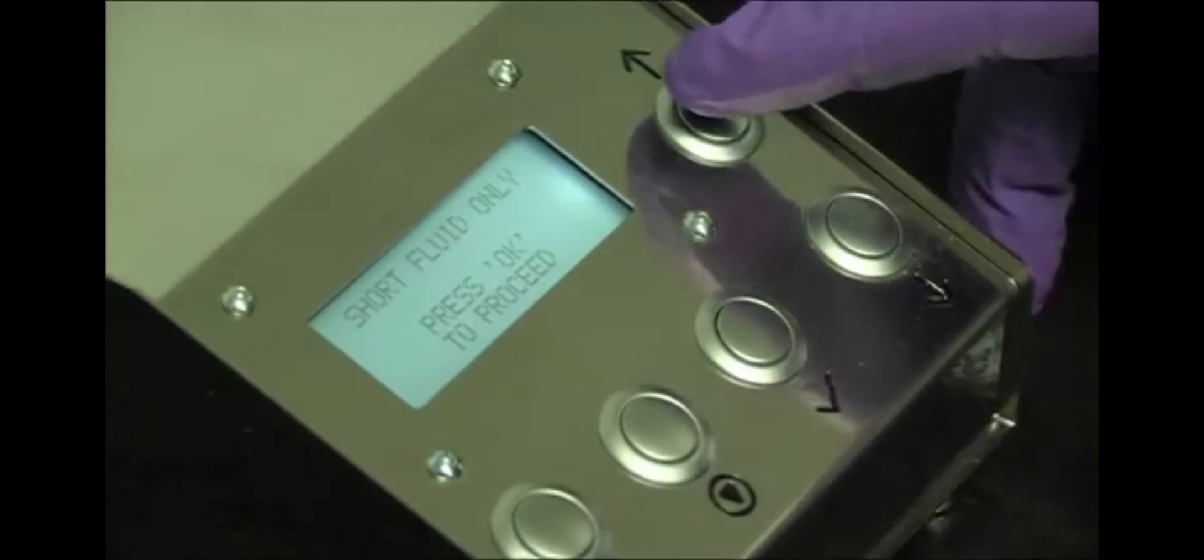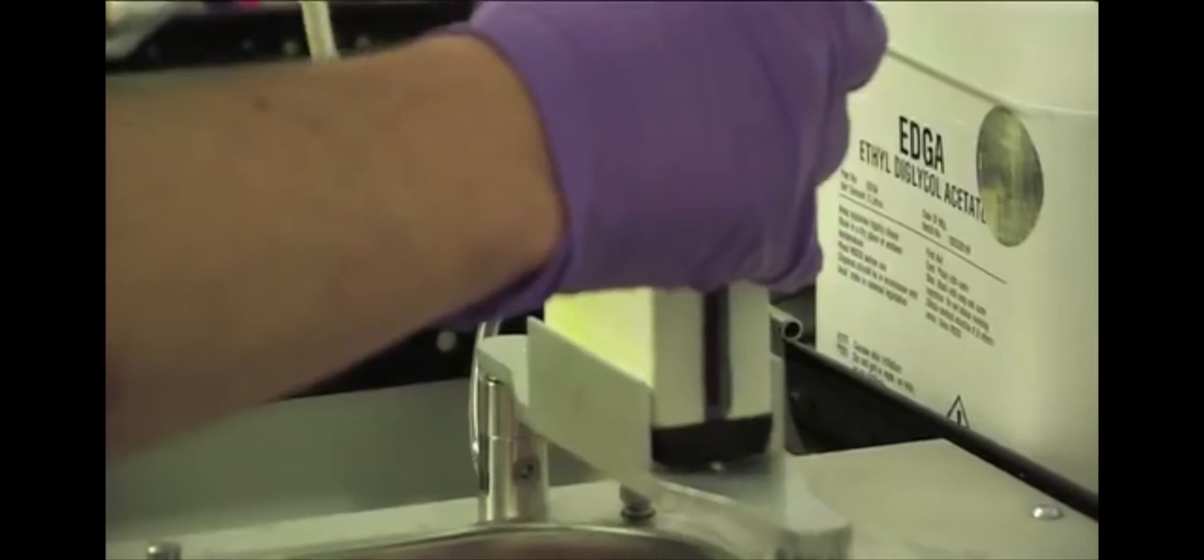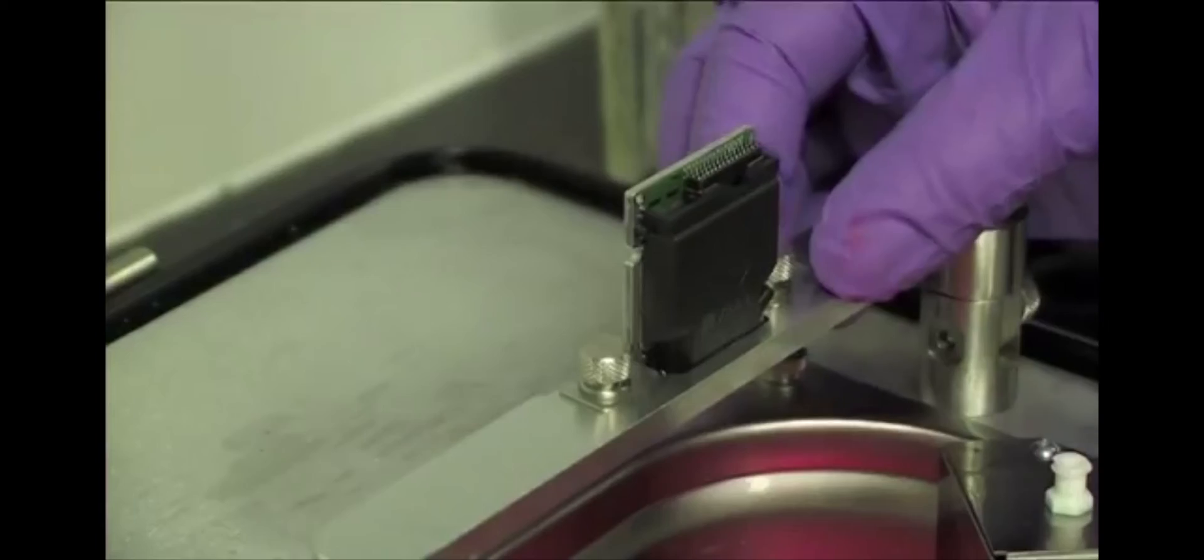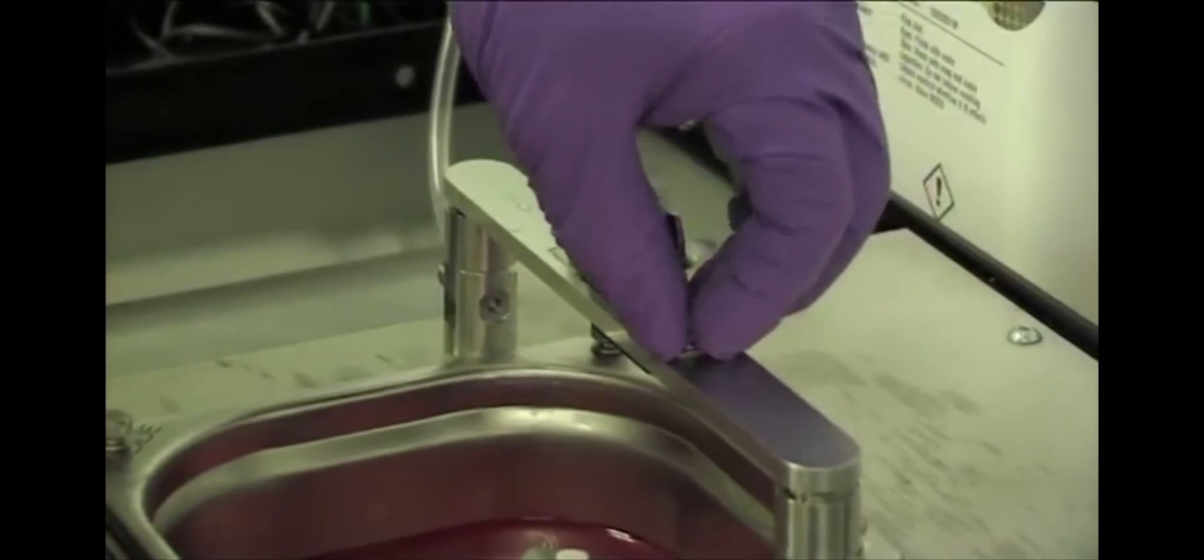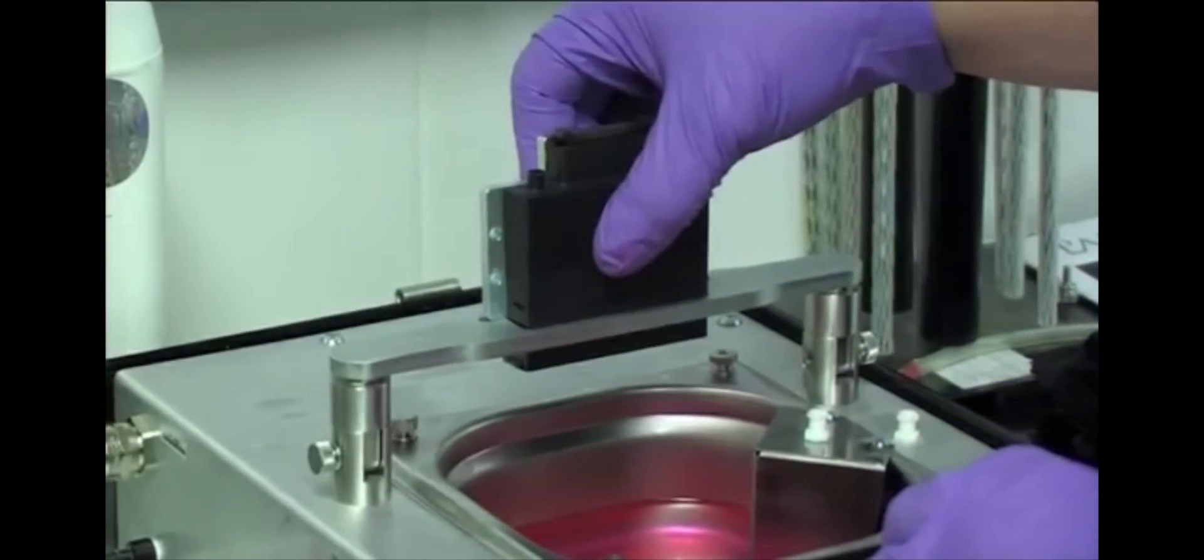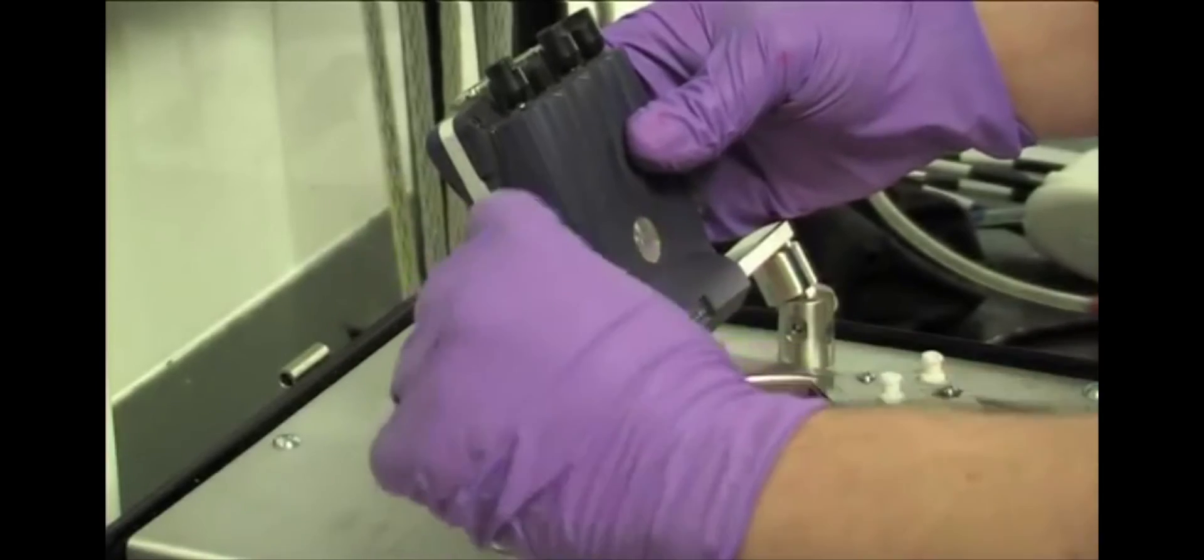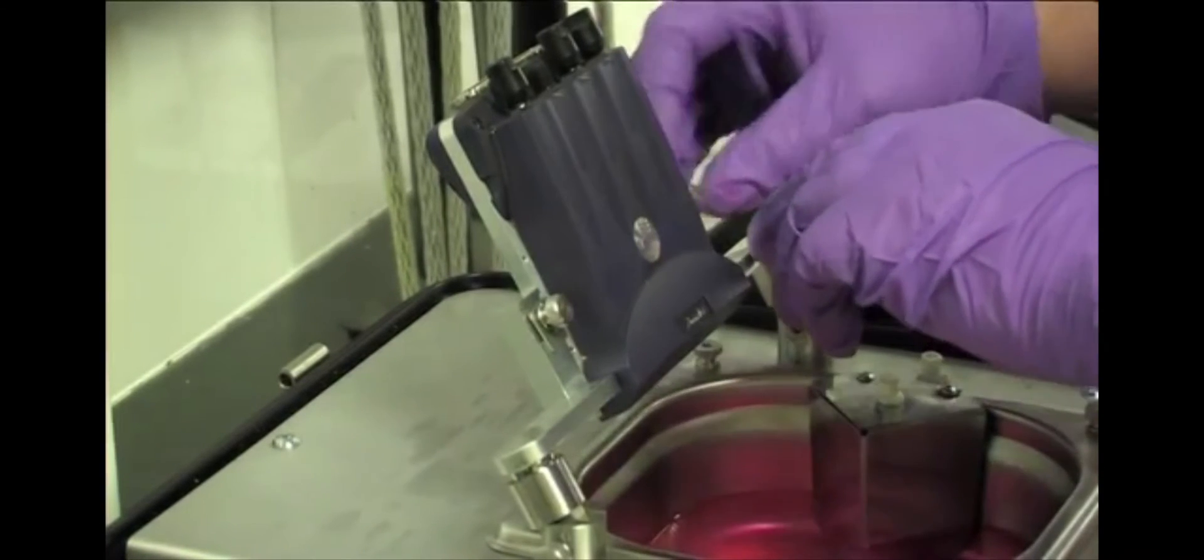Pre-programmed flushing sequences are available to suit each individual model of Tsar printhead, which can be repeated as necessary in order to remove even the most stubborn blockages. The Pantheon flush rig is suitable for use with all ink types, including UV, water-based, oil-based, ceramic and solvent-based.